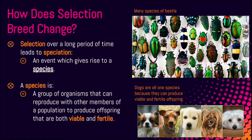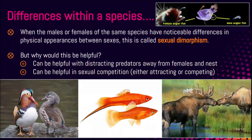We have all these different species of beetles. Some of them are very similar in some of their attributes and some are extremely different, but they're all different species and can't intermingle. The dogs look different but they're still the same species because they can reproduce with each other and produce viable and fertile offspring. Now, when the males and females of the same species have differences in physical appearance between sexes, this is called sexual dimorphism. 'Di' meaning two, 'morph' meaning structures or changes — so there are two different versions of appearance within a species.